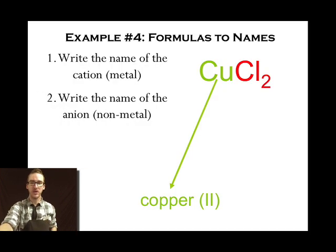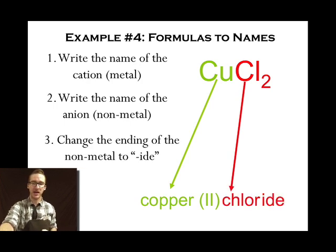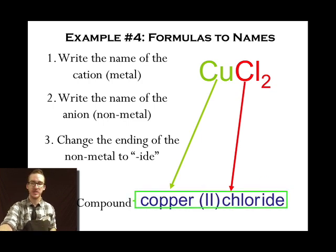Next step, write the name of the anion. In this case, chlorine. But finally, don't forget to change the ending of that anion to IDE. Copper two, chloride. There's my name that represents this ionic compound.